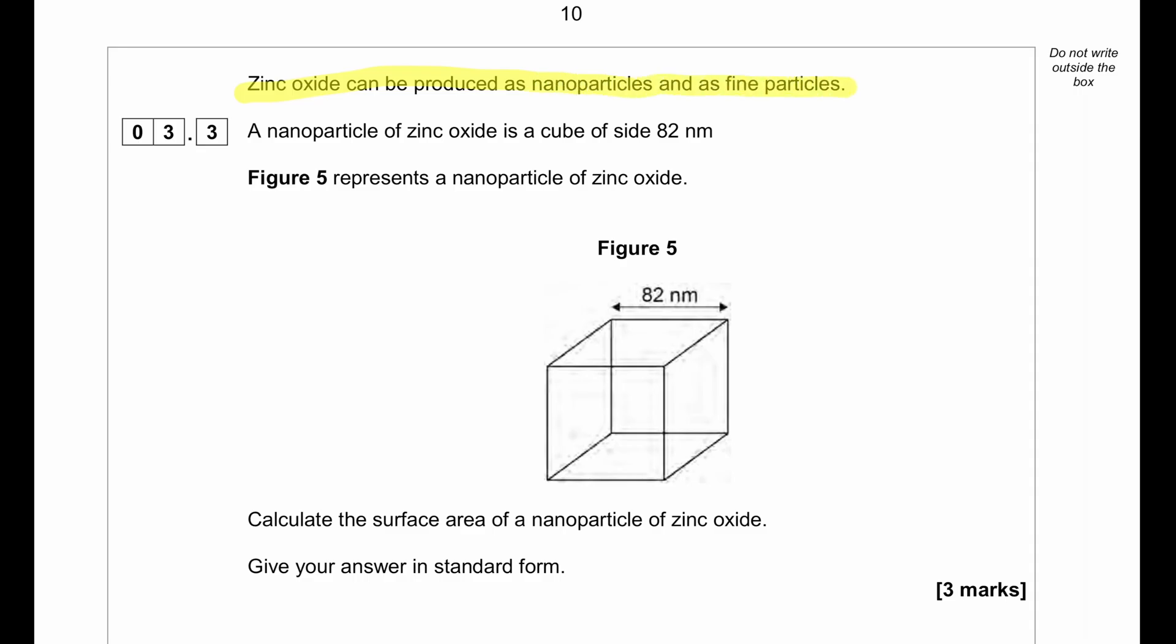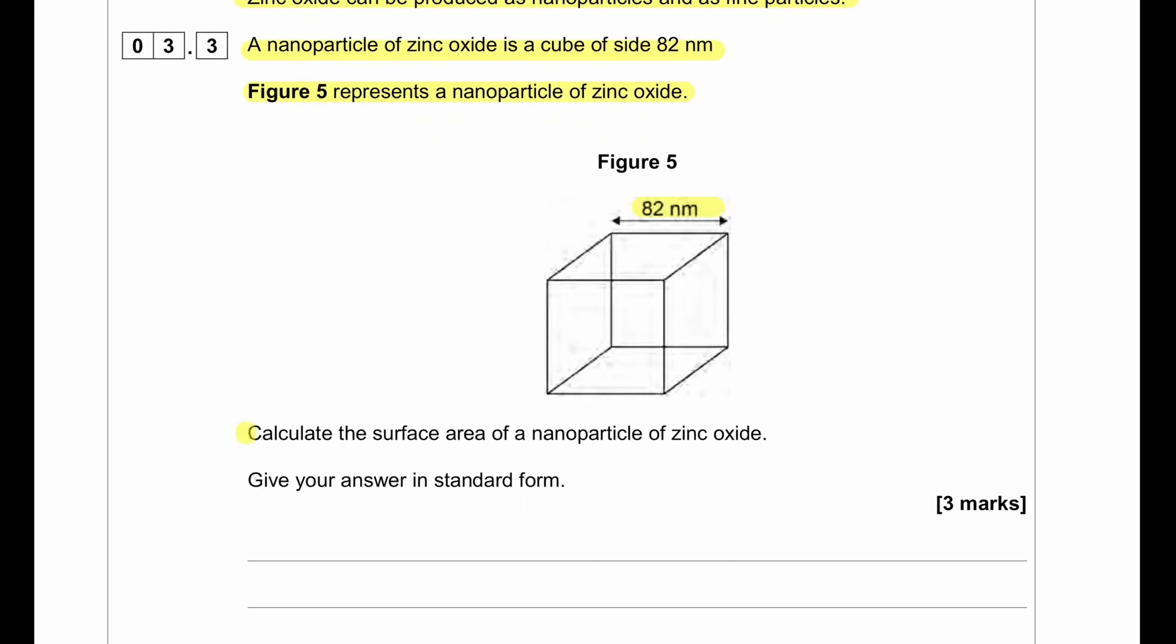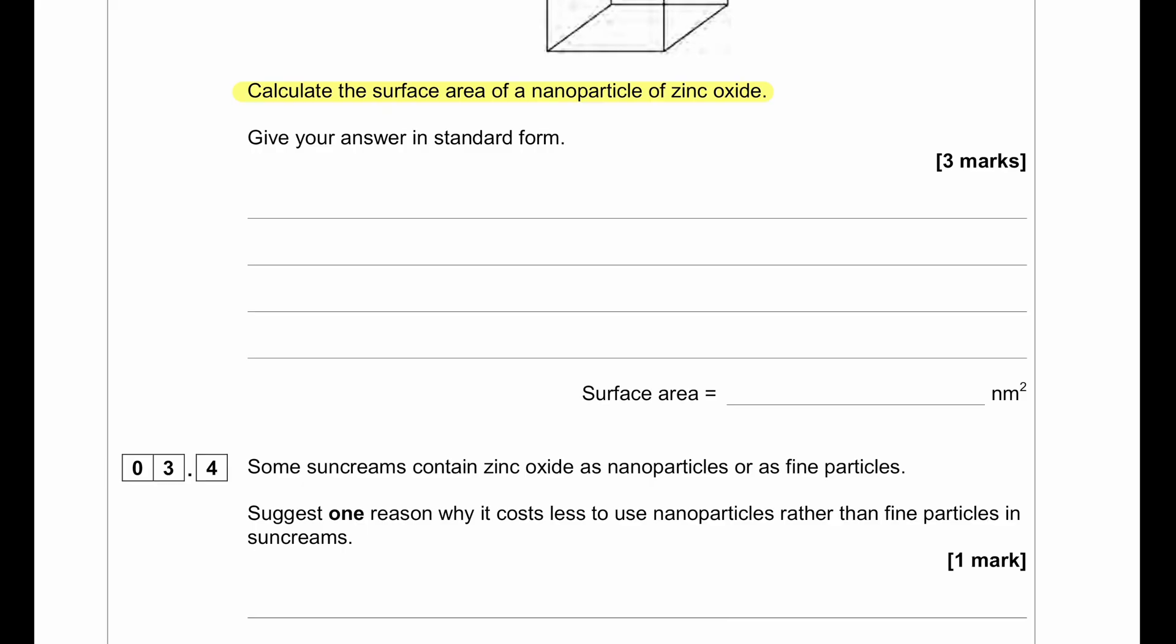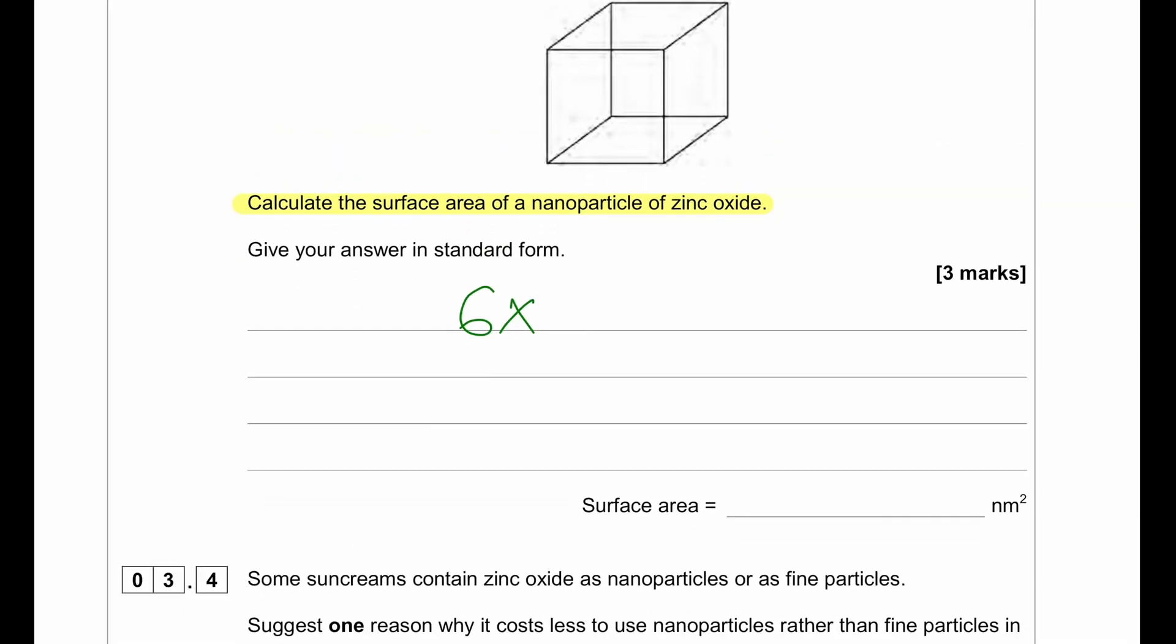Zinc oxide can be produced as nanoparticles and as fine particles. A nanoparticle of zinc oxide is a cube of side 82 nanometer. Figure 5 represents a nanoparticle of zinc oxide. Calculate the surface area of a nanoparticle of zinc oxide. If we need to find the surface area, we need to know there are 6 faces of a particular cube and each face will have 82 nanometer times 82 nanometer to find its surface area for one side. So we are going to multiply that: 6 times 6724, and our answer is going to be 40344 nm². Since they want the answer in standard form, we convert it to 4.0 × 10⁴.